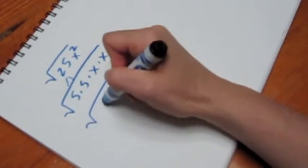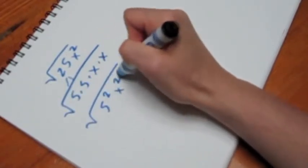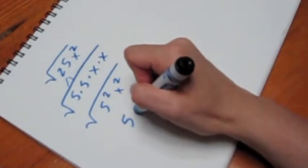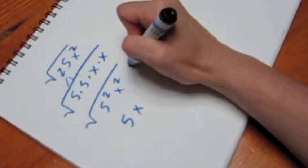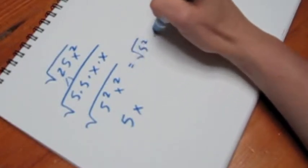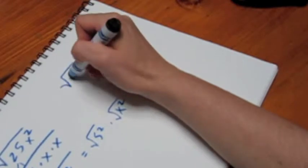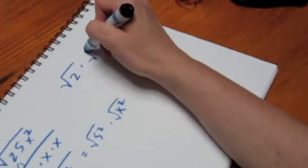So if we're looking for pairs, this is 5 squared and x squared. So this is going to be 5x, because both of those are things that are squared. It's the same as 5 squared times x squared, or the square root of 5 squared times the square root of x squared.